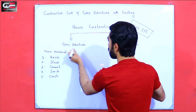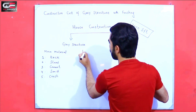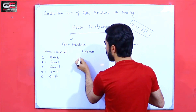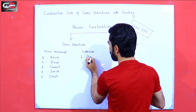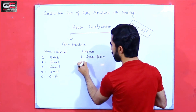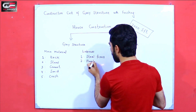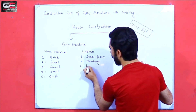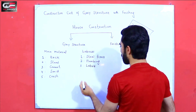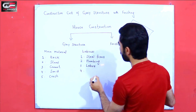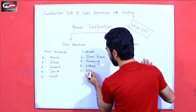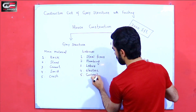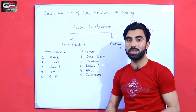For gray structure we also require labor. We have five main types of labor. The first one is steel fixer. The second one is plumbing labor. The third one is normal labor. The fourth one is electrician for electric work. And the fifth one is contractor. These five main labors are required to complete the gray structure.